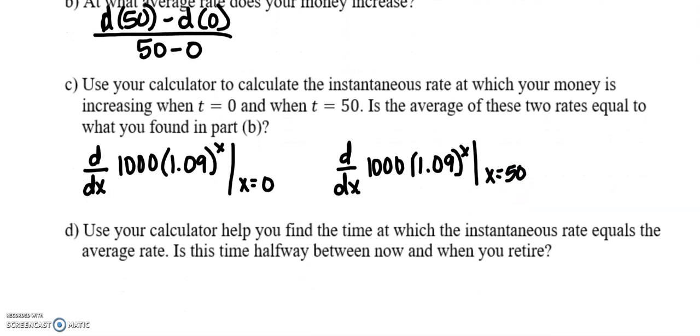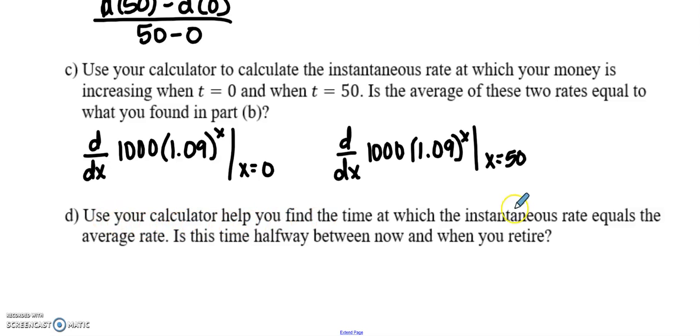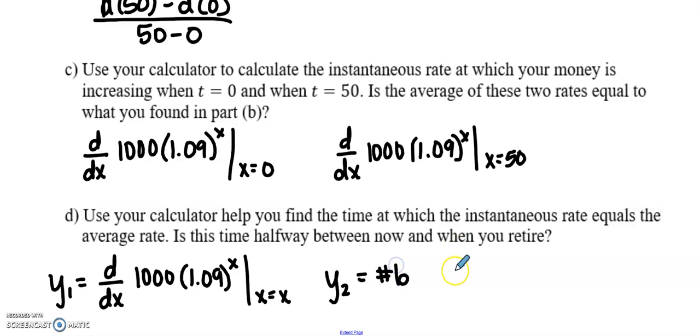And then this last one calculator to help you find the time at which the instantaneous rate equals the average rate. Well, you're going to want to take the derivative in your y1, the derivative of 1000(1.09)^x for all x equals x just like the video. And in y2, you're going to put your number from part b and you're going to find where they intersect. So go ahead and do that. And then pause your video to go do that. Come back when you're ready to compare answers.